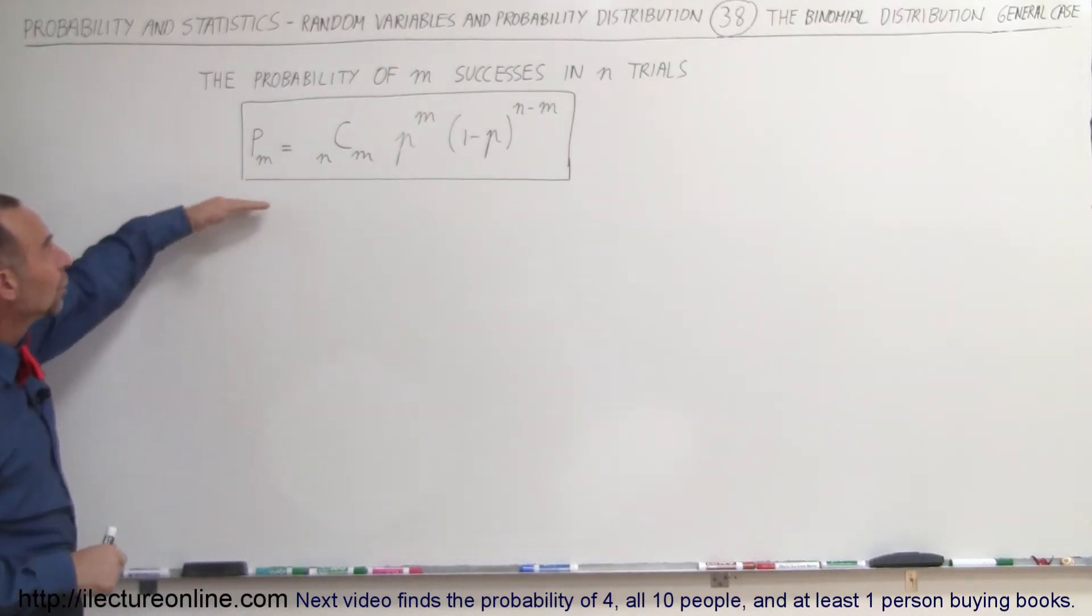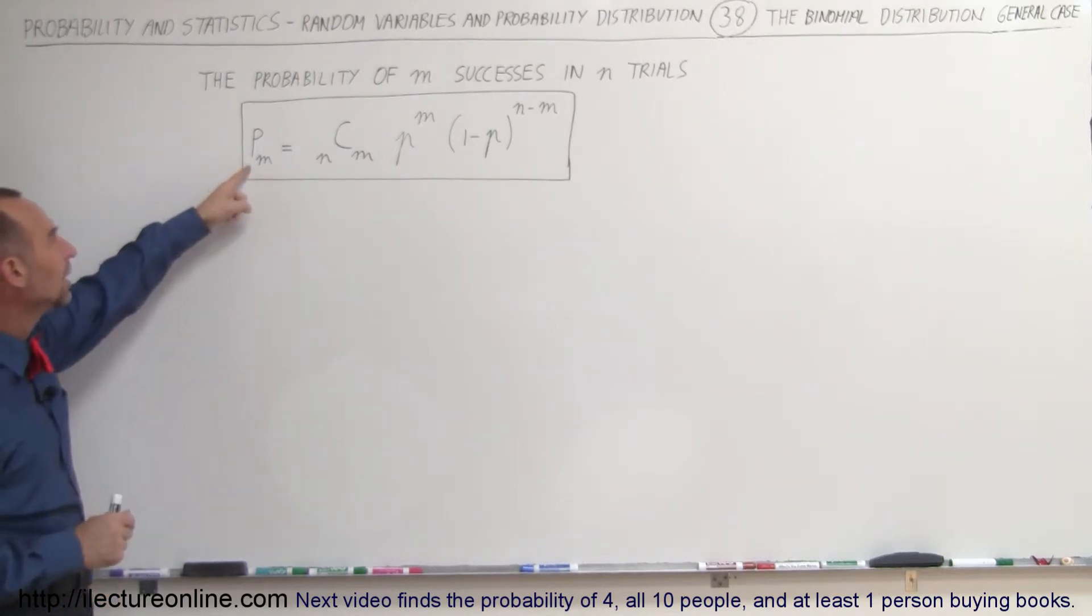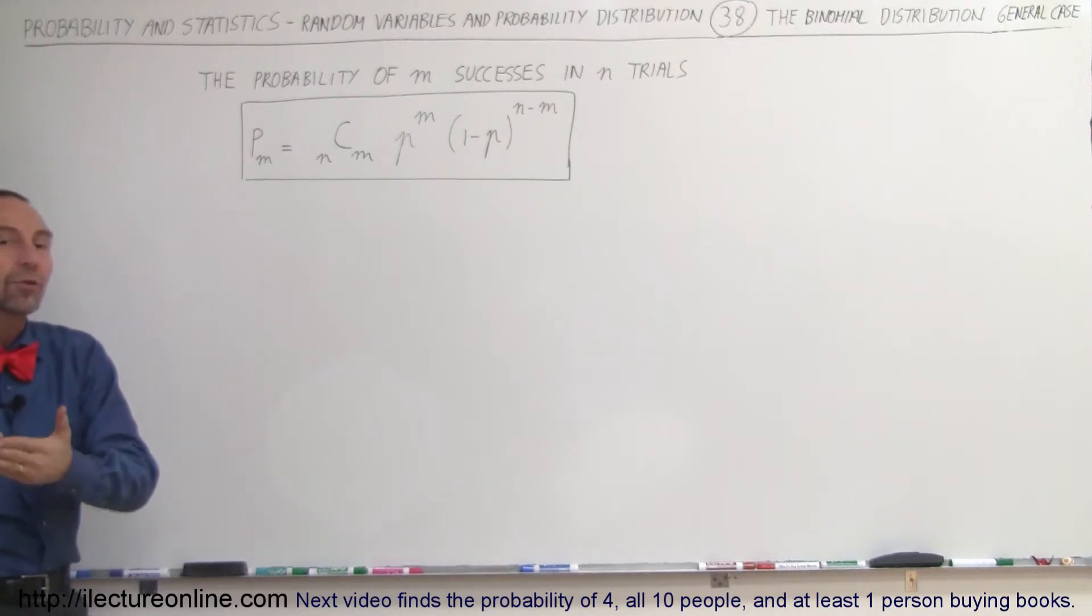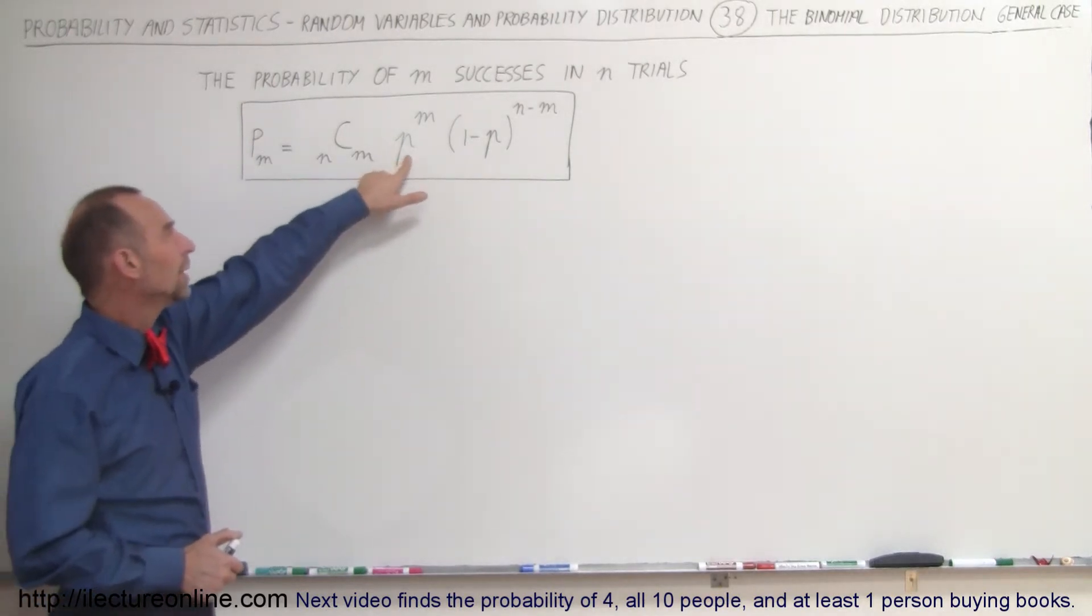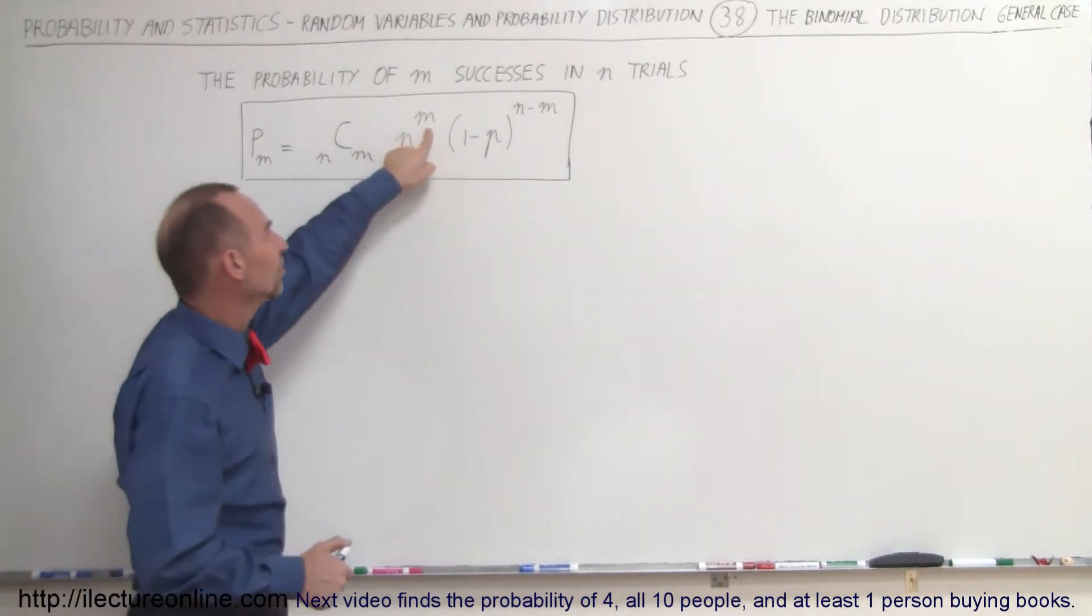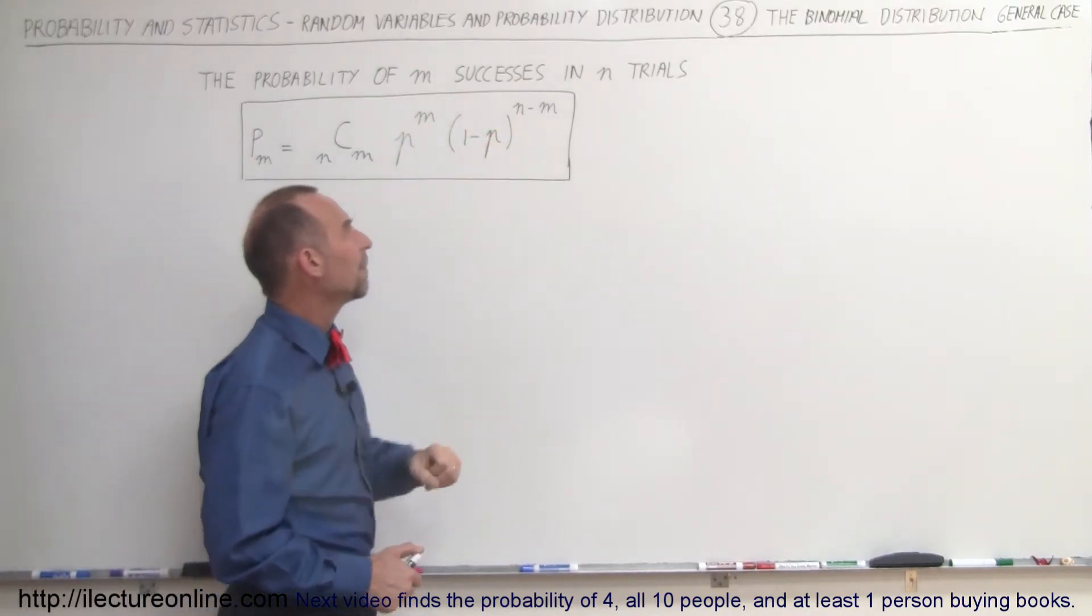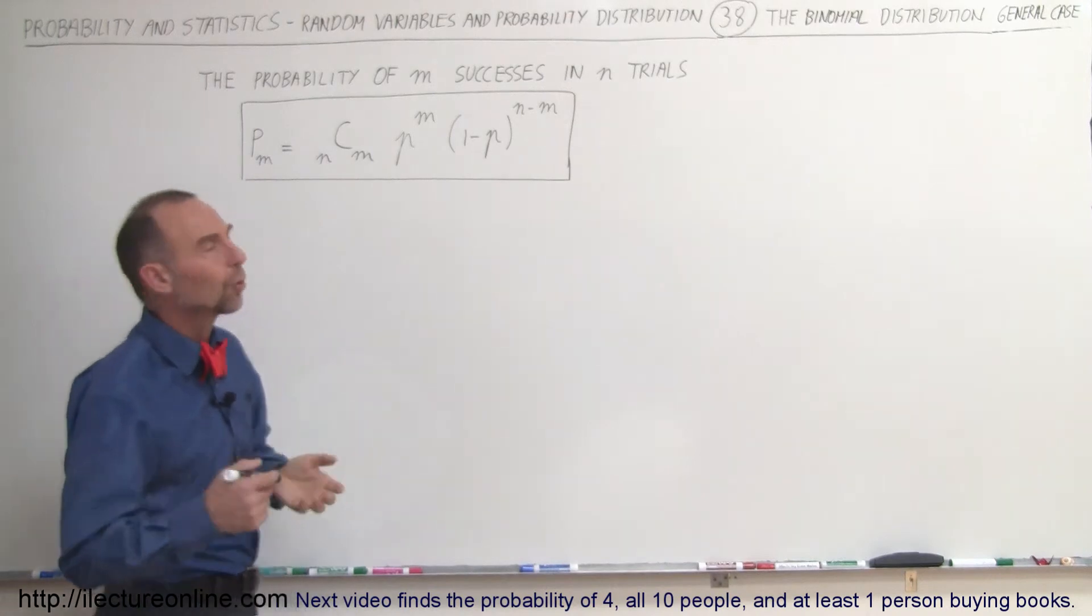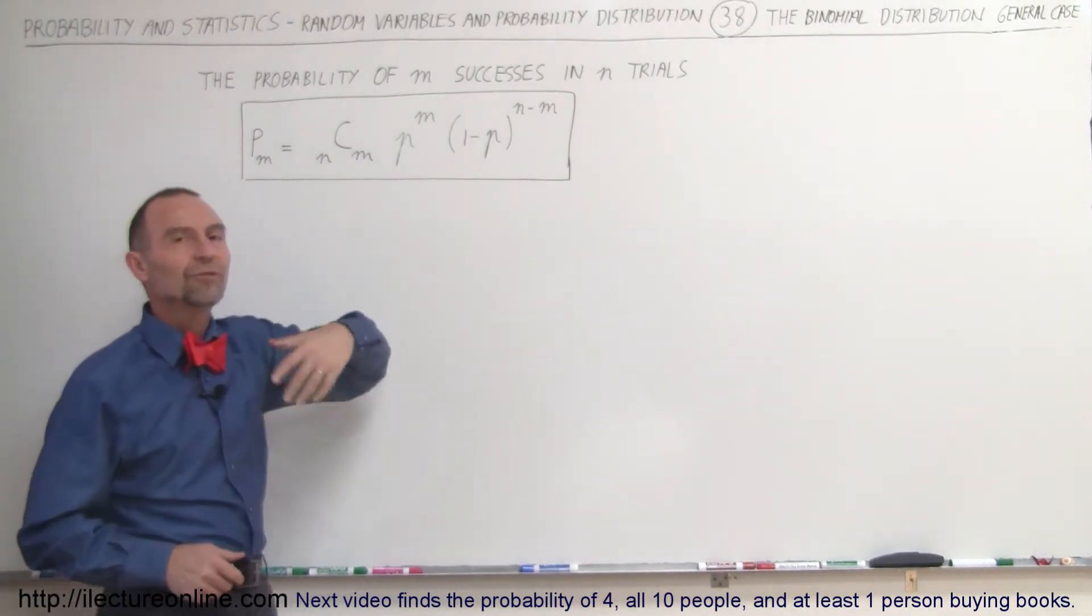We can actually use what we call the general equation for the general case. The probability of m successes would be equal to the combination n choose m times the probability of m successes times the probability of failure to the n minus m power. n being the total number of trials, m is the number of successes, and 1 minus p is the probability of failure.